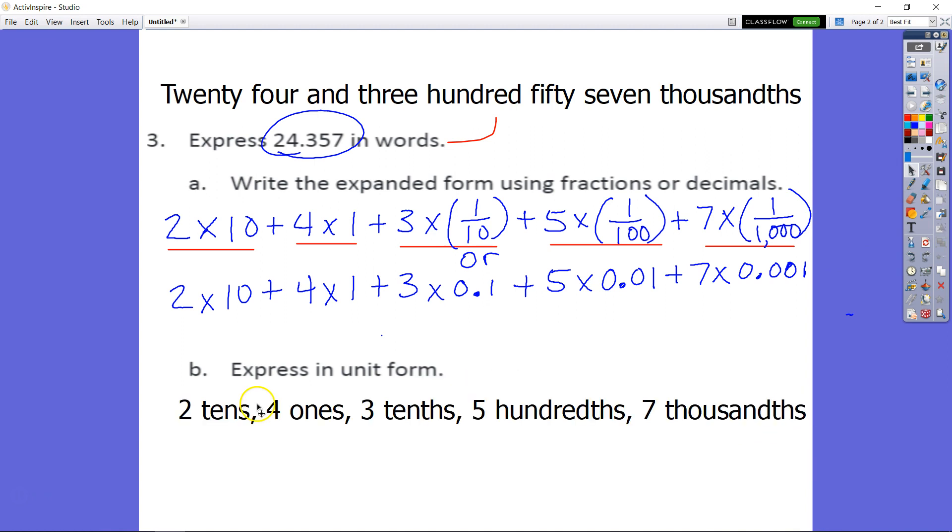So unit form for this number: we have 2 tens, 4 ones. We have 3 times 10 equals 3 tenths, 5 times 100 equals 5 hundredths, and last but not least, 7 times 1000—7 thousandths.